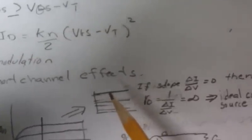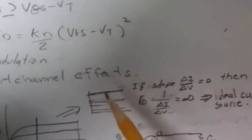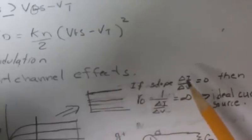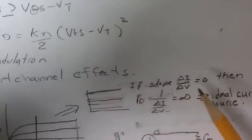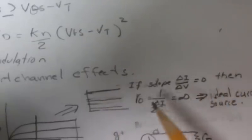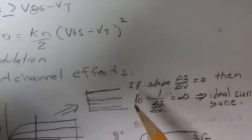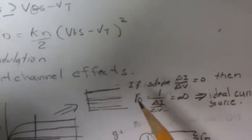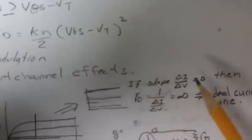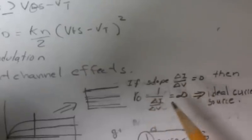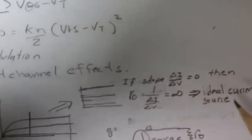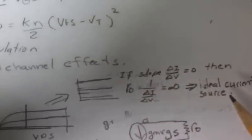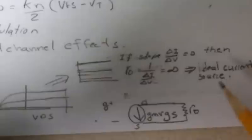The way I've drawn it, the slope of this line is zero — delta I over delta V. Then something called the output resistance of the current source, which is one over that slope, would be infinite, which would be an ideal current source.